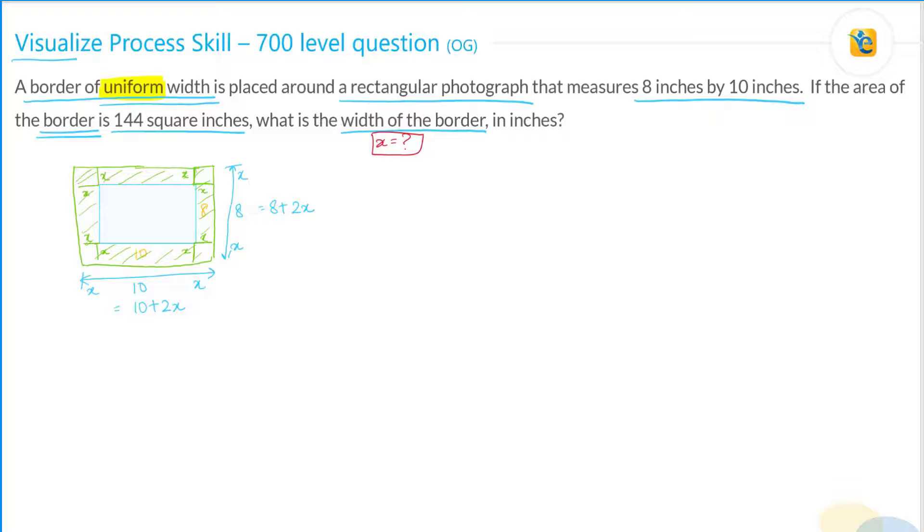So, the overall area—the entire area over here—is (8 + 2x) into (10 + 2x). And if you subtract the inside area, this area over here, that is 8 by 10. This is the area of the border, which has been given to you as 144.